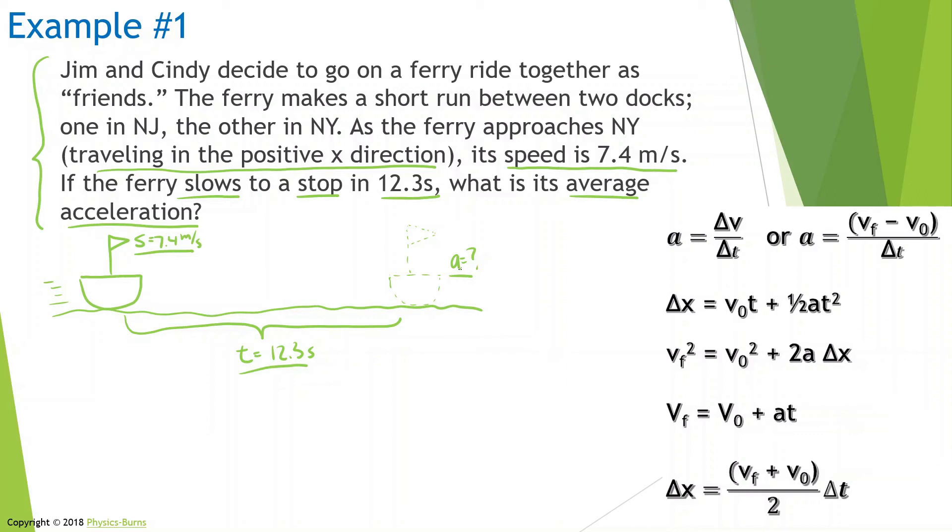But also remember, when it comes to kinematics, you need to have three known variables. At the moment we only have two: the speed at the beginning and the time. But if we read this again, we see keywords such as "slow to a stop in 12.3 seconds." That means the speed when it reaches the end over here is going to be equal to zero meters per second because it comes to a stop. Now we have three known variables and our one unknown.